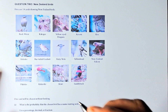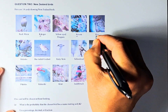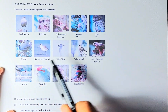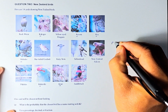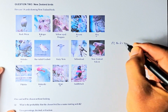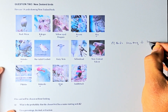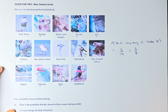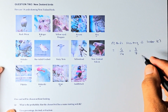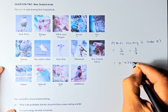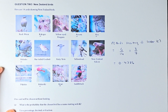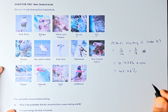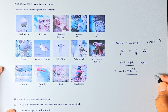Use a percentage, decimal, or fraction. Looking at the birds, Kakapo starts with K, then Kereru, Kia, Kokako, Kakawiki, and Kiwi — that's 1, 2, 3, 4, 5, 6. And there are 14 cards in total. So the probability of a bird starting with letter K is 6 over 14, or simplified, 3 over 7. In decimal, 3 divided by 7 gives 0.4286. As a percentage, multiply by 100 to get 42.86%. So either 3/7, 0.4286, or 42.86% will give you outcome number 1.